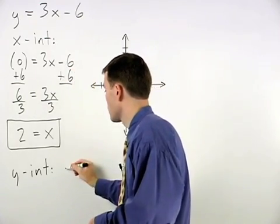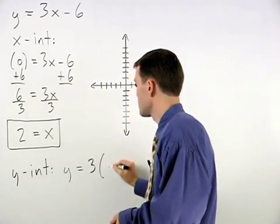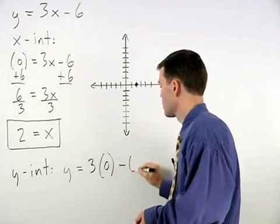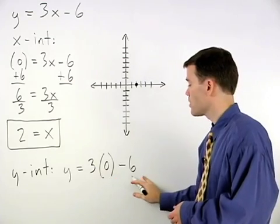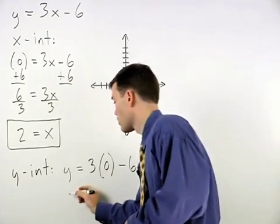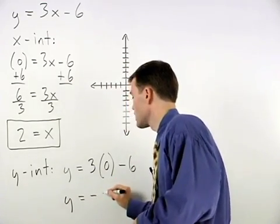And we have y equals 3 times 0 minus 6. So y equals 0 minus 6, or y equals negative 6.